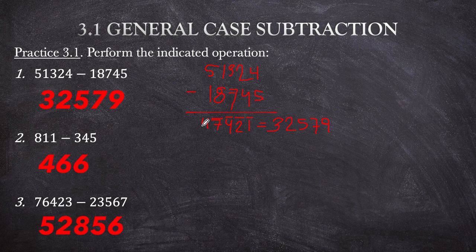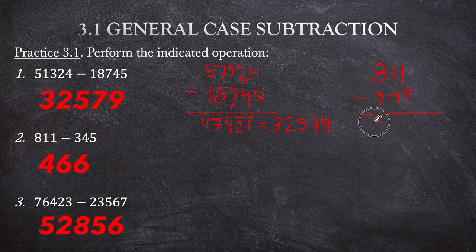Number 2: 811 minus 345. So: 8 minus 3 is 5; 1 minus 4 is bar 3; 1 minus 5 is bar 4. Converting: subtract 1 to get 4, then 'all from 9' gives 6, and 'last from 10' gives 6. Answer: 466.